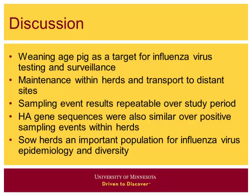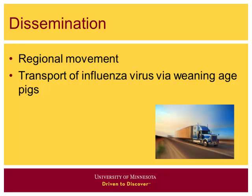For discussion: weaning age pigs appear to be an important population for influenza virus epidemiology. They are a good population for testing and appear important for maintenance of influenza virus within herds. As weaning age pigs transport to distant sites, they are an important population to consider for regional dissemination of influenza viruses. In this study, sampling events were fairly repeatable over time — farms tended to test positive with similar viruses each month — illustrating that sow herds are important for studying influenza epidemiology and for virus diversity in pig populations.